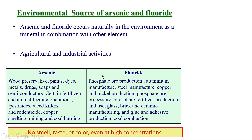Regarding environmental sources of arsenic and fluoride — you may think it is due to industrial contamination, but in most cases it is not. Arsenic and fluoride occur naturally in the environment as minerals in combination with other elements, though agricultural and industrial activities can also contribute.